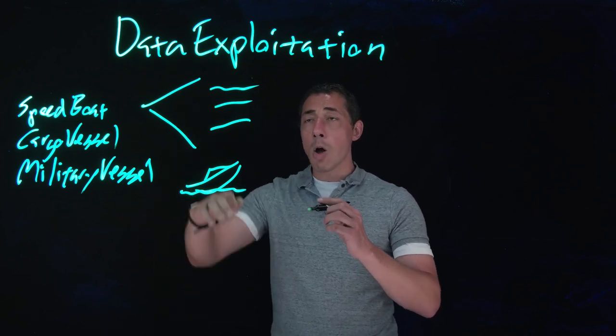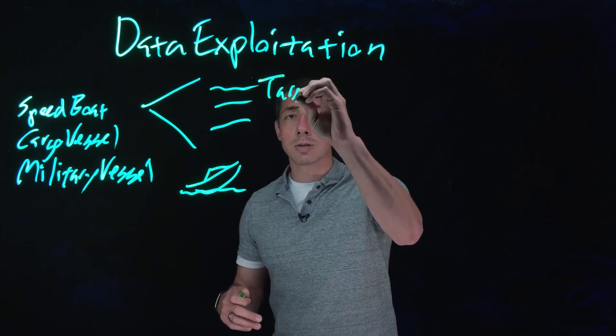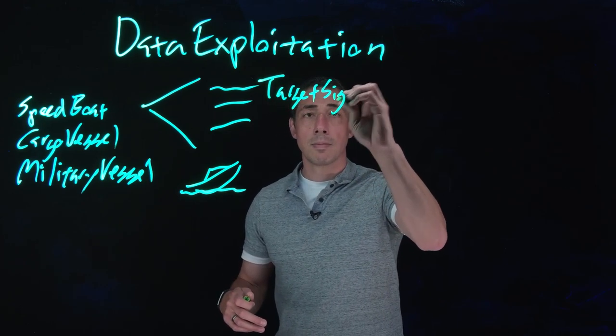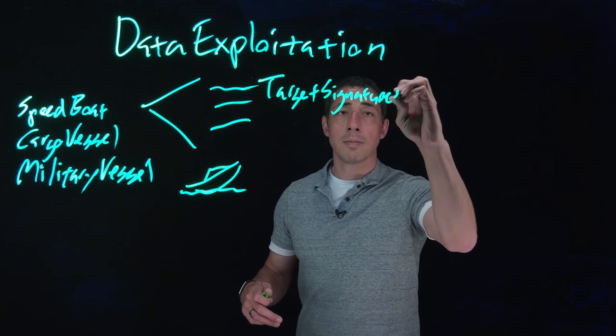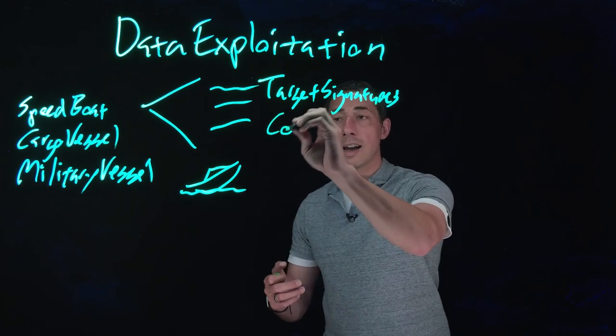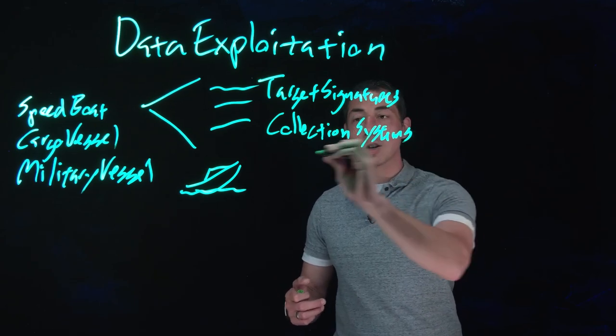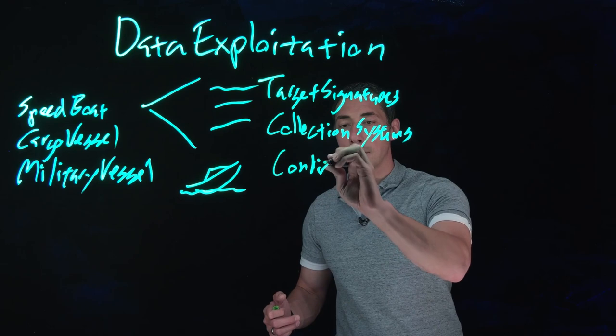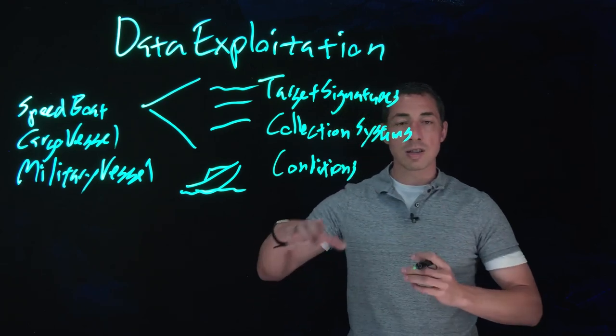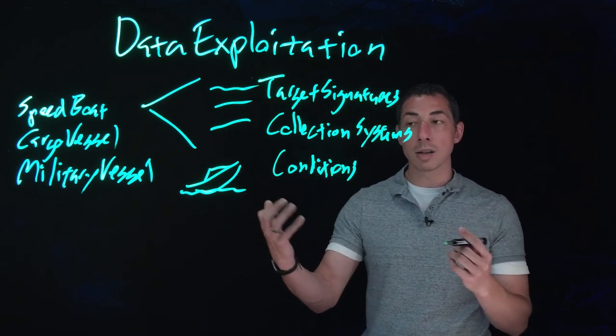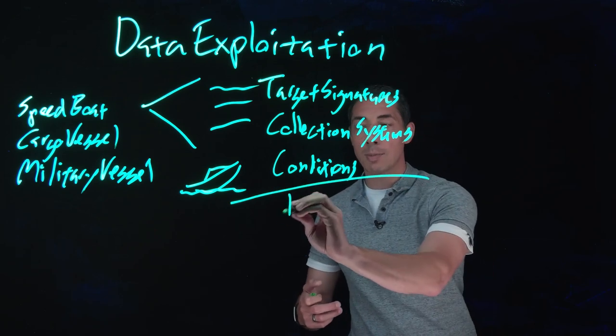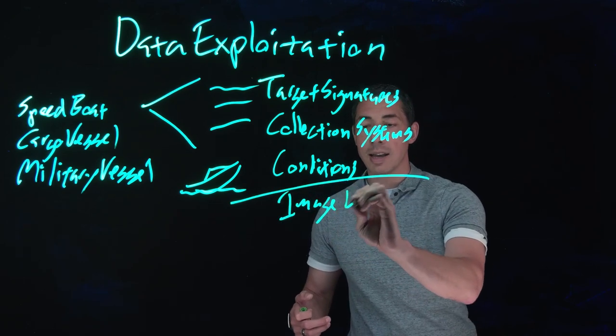All of these are your target signatures, but you combine these with your collection systems and your conditions. So this is how you collected it and what did it look like when you collected it to produce some type of image data.